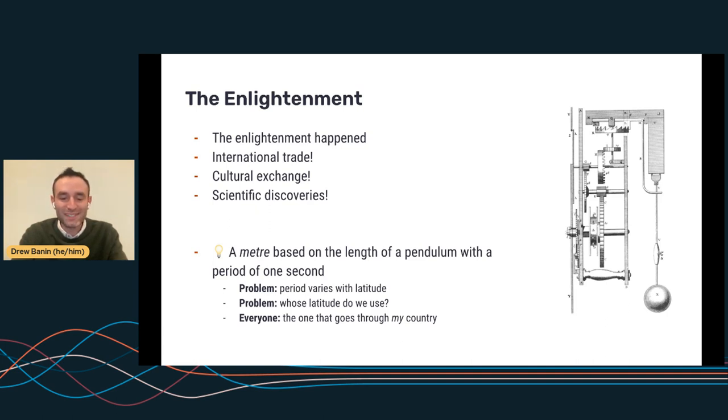And they had to decide whose latitude they were going to use. And the problem is, every single participant in this conversation wanted to use a line of latitude that went through their country. So it feels petty. It's like we were right on the precipice of the almost protometric system. And everyone gets hung up on whose line of latitude do we use. But actually, I think it's a really important point.